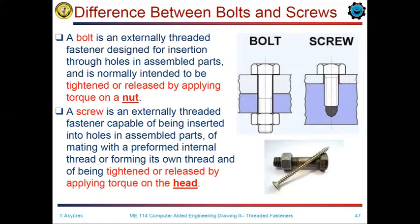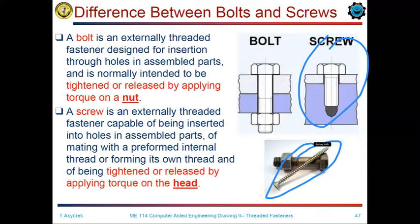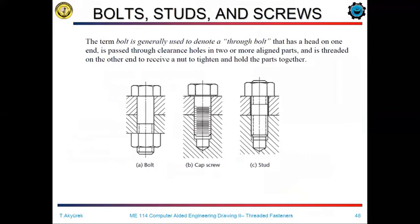At this point, we must define the difference between the bolts and the screws. The bolts are the machine elements mostly used with a nut fastener. And the screws are the machine elements used for fastening parts, mostly to form their own threads during the fastening process.